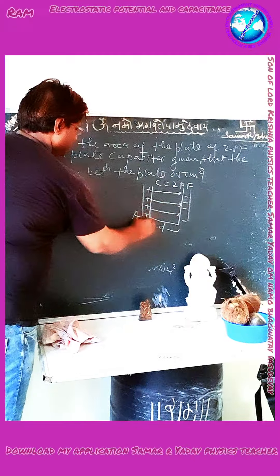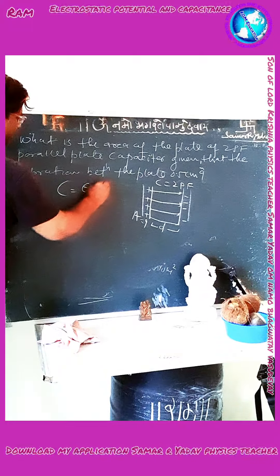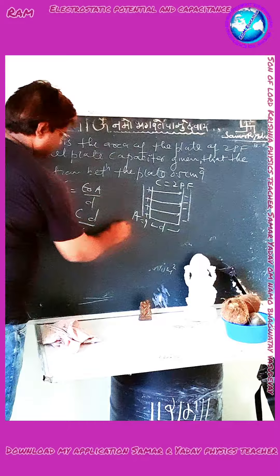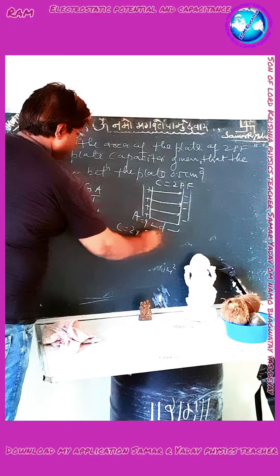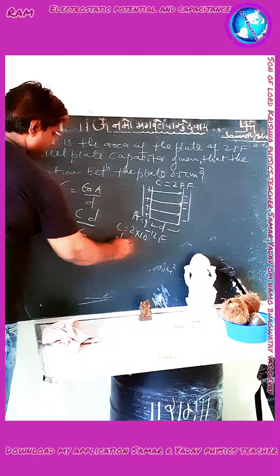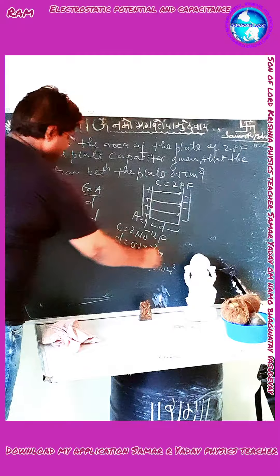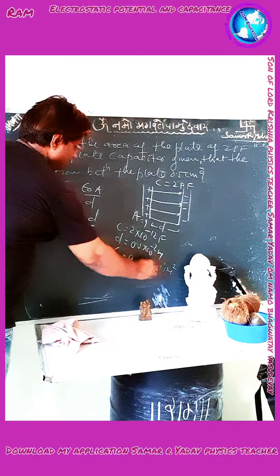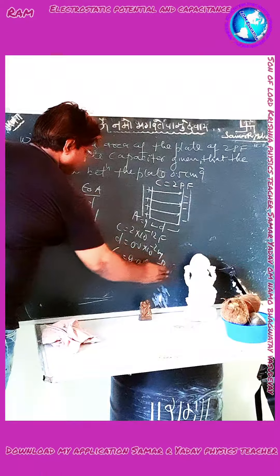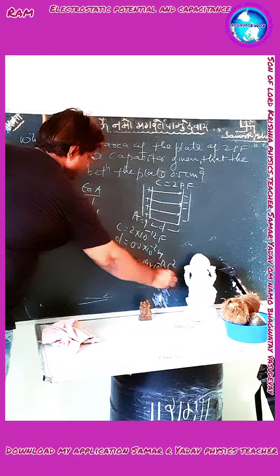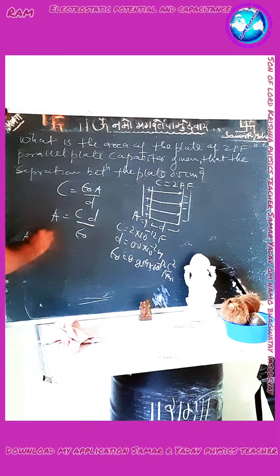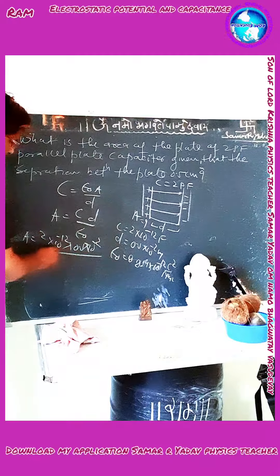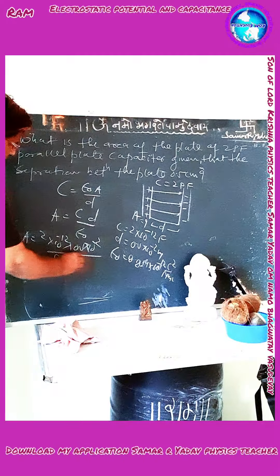Now we find the area A. We know that C is equal to epsilon-0 times A upon D. Therefore, A is equal to C times D upon epsilon-0. C is given as 2 picofarad, which is 2 into 10 to the power minus 12. D is equal to 0.5 cm, which is 0.5 into 10 to the power minus 2 meters. And epsilon-0 is 8.854 into 10 to the power minus 12 coulomb squared per Newton per meter squared. Substituting: A is equal to 2 into 10 to the minus 12 times 0.5 into 10 to the minus 2, divided by 8.854 into 10 to the minus 12.